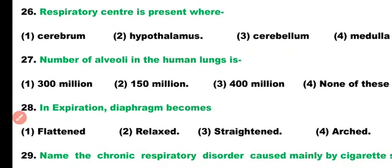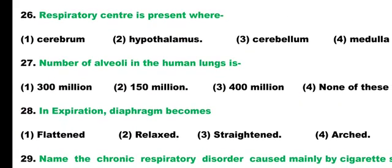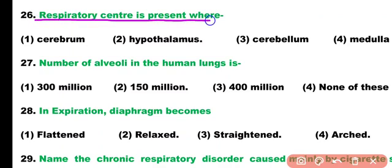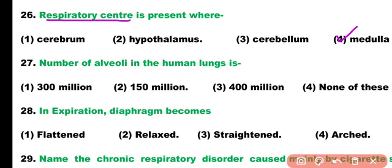Question number 26. The respiratory center is present in: cerebrum, hypothalamus, cerebellum, or medulla oblongata. Correct answer is option 4. The respiratory rhythm center is present in medulla oblongata, and the pneumotaxic center is present in the pons.